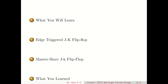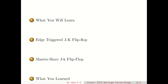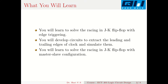The session is organized with learning outcomes, then the circuit of the edge-triggered JK flip-flop, then the master slave JK flip-flop, and a summary. You will learn to solve the racing difficulty in a JK flip-flop using edge triggering, so that with J equal to K equal to 1, the output will not be in an indeterminate state due to multiple toggling. We can avoid this by two methods, one of which is edge-triggered flip-flops.